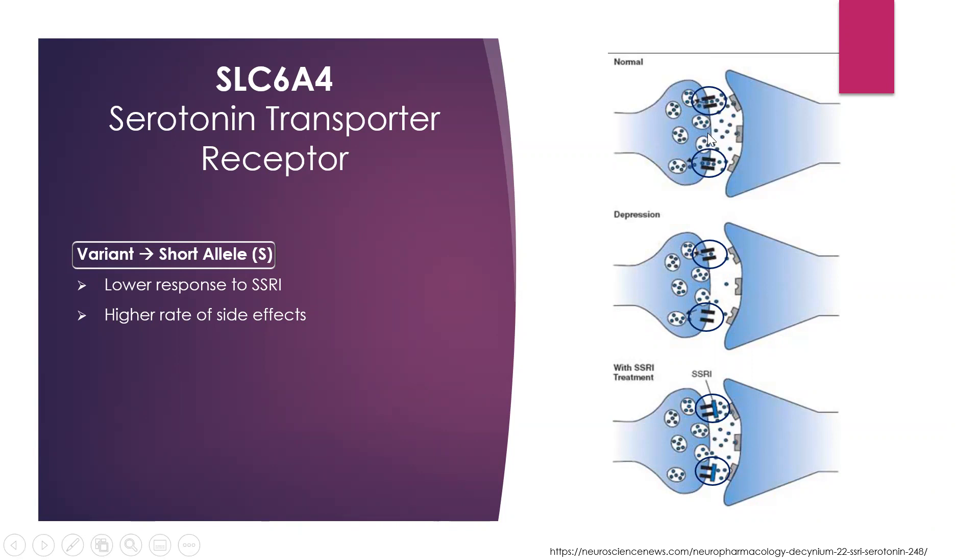The individual with the short allele doesn't have enough of these transporters in the presynaptic cell to pick up the serotonin back into the presynaptic cell and into the vesicle.